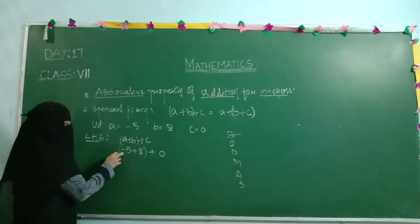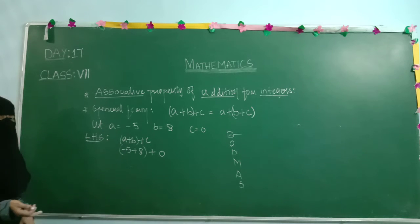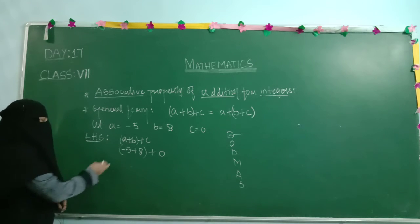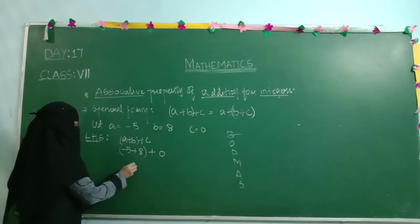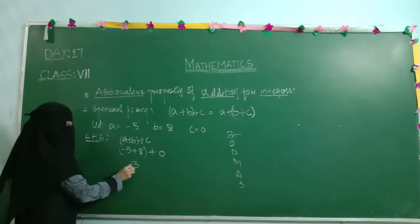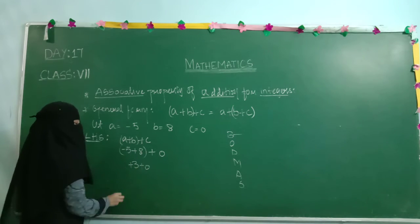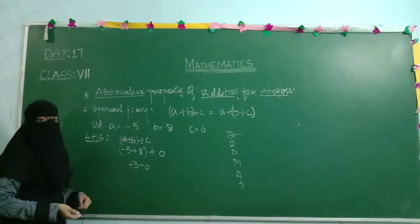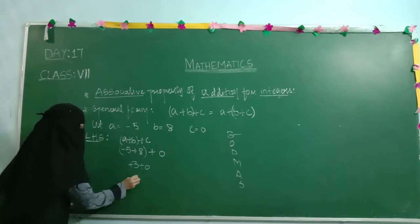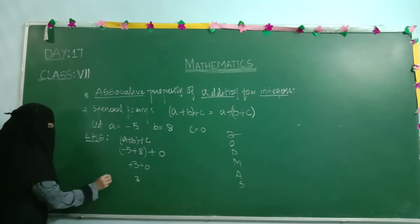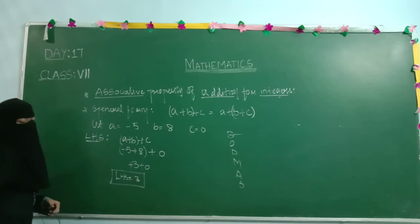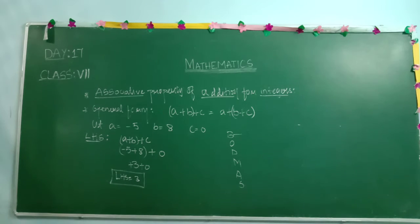Within the bracket we have minus 5 plus 8. When there are different signs we perform subtraction. Minus 5 plus 8 is 3, since the bigger number is positive. Then 3 plus 0 remains 3. So LHS equals 3.